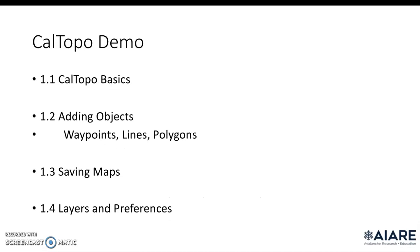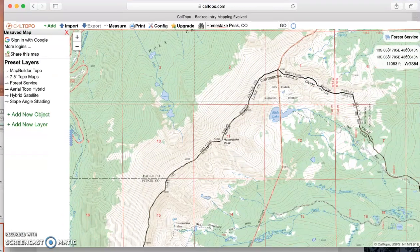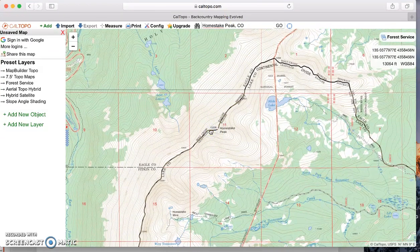I'm going to spend a few minutes doing a basic CalTOPO demo, going over basics: adding objects, saving maps, a quick tour of the layers and preferences. There's also an exercise built into this presentation for a quick check for understanding. Here we are at caltopo.com, at Homestake Peak in Colorado, which is where the check for understanding exercise is set.